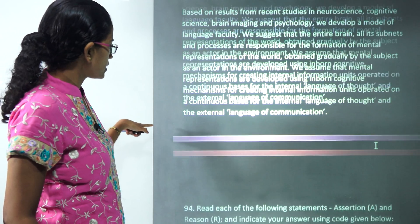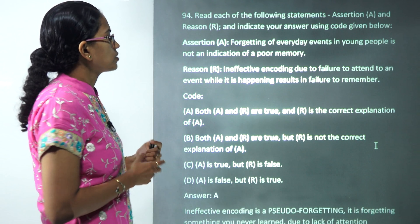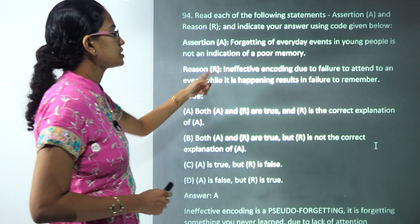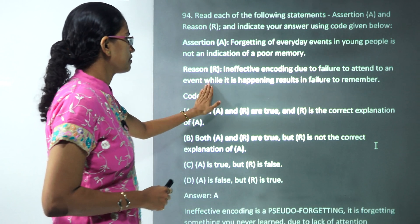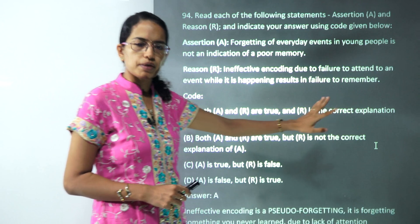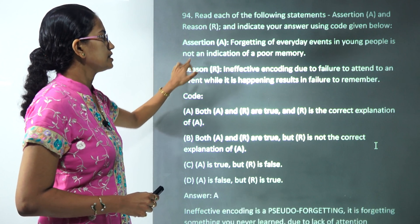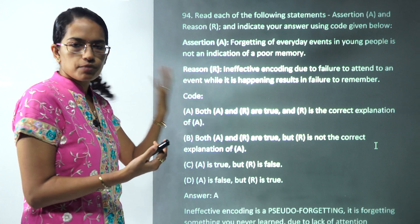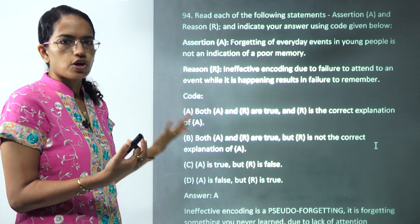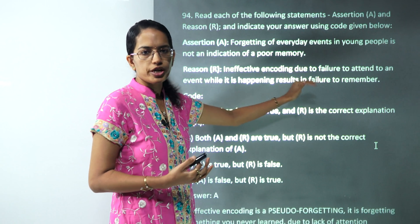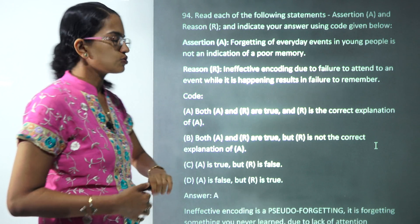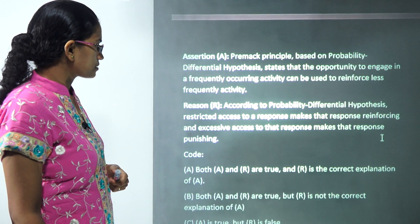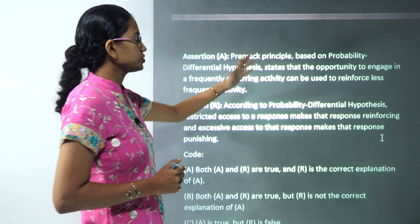The next assertion-reason question states that forgetting of everyday events in young people is not an indication of poor memory — that's correct. The reason explains that ineffective encoding due to failure to attend to an event while it's happening also results in failure to remember. Both statements are correct, and the reason correctly explains why, beyond the typical cause of poor memory.